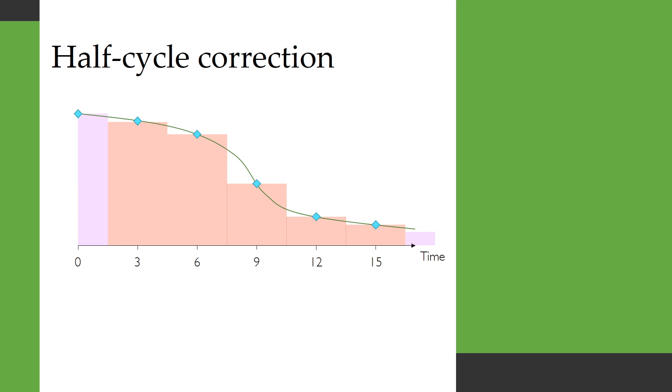And so what has typically been done in Markov cohort simulations is something called a half cycle correction, which is where you can kind of imagine for the first cycle we just halve its length and then we shift everything back by half a cycle and now you can see that we're much closer to the true area under the curve.